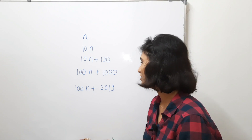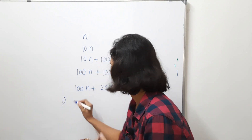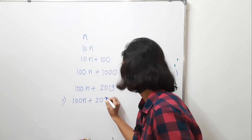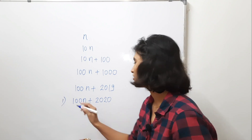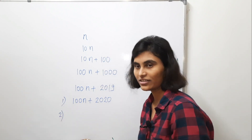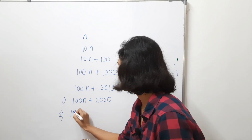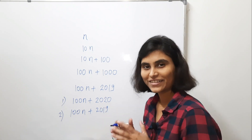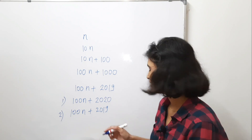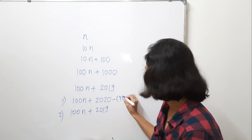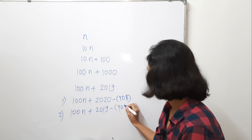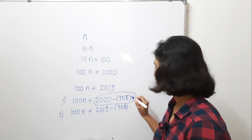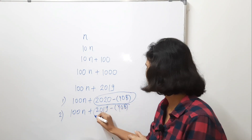Now there are two cases. Case 1: if your birthday is in this year, then we add 1, so the answer becomes 100n + 2020. Case 2: if your birthday is not in this year, we do nothing, so the answer is just 100n + 2019. At this point we subtract the year of birth, and the result is your age.